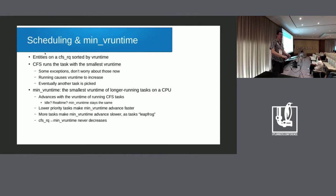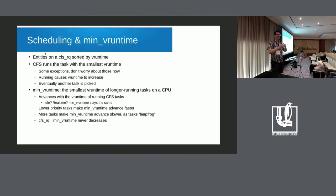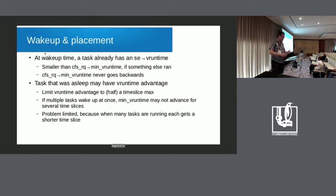The v-runtime can advance at totally different rates on different CPUs, so you cannot really compare v-runtime values across CPUs. But inside a single CPU it is a useful, meaningful number. The min-v-runtime also never decreases, which matters a lot for wake-up — at wake-up, some special things happen.